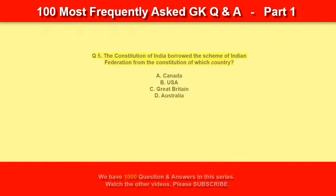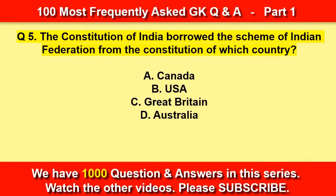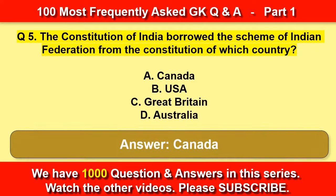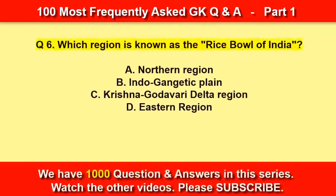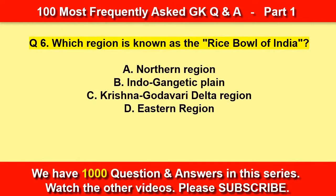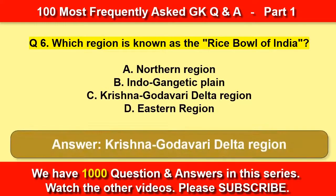The constitution of India borrowed the scheme of Indian Federation from the constitution of which country? Canada. Which region is known as the rice bowl of India? Krishna Godavari Delta region.